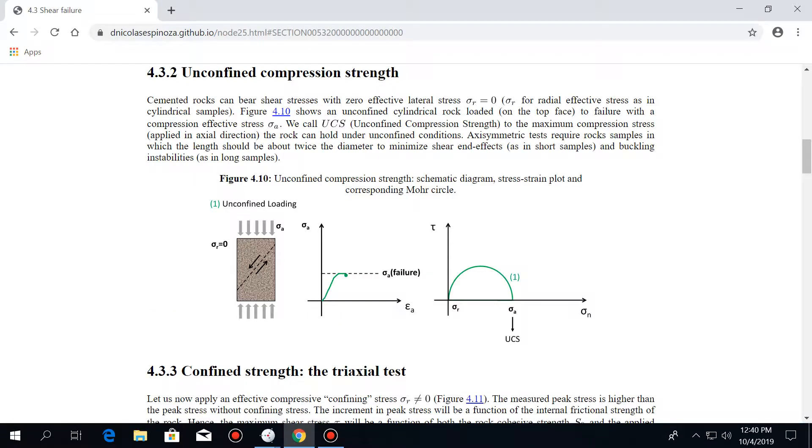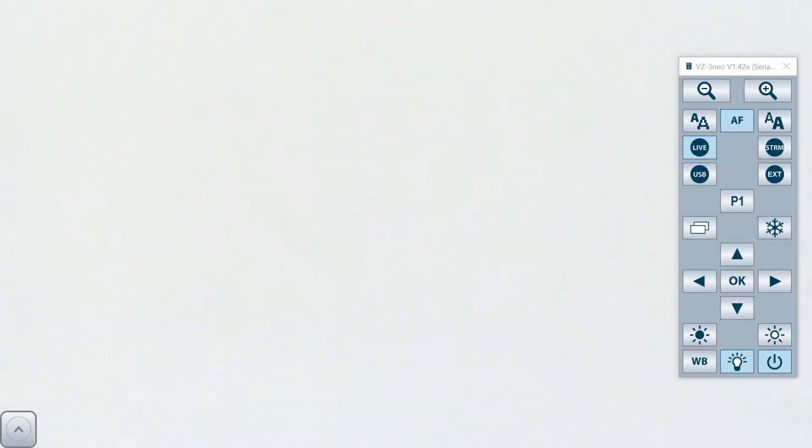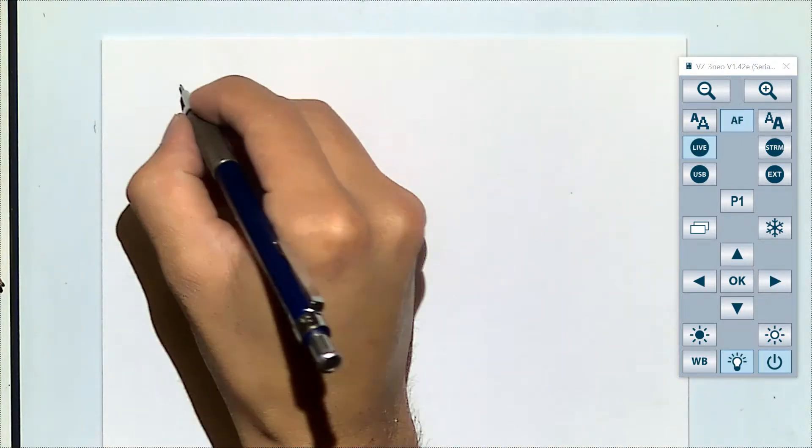We have already done the test of unconfined compression strength, right? In unconfined compression strength, what we do is we subject the rock to an axial load and then measure how much load it can take. This is the result. Let me get my camera here. You already did this for the first laboratory.